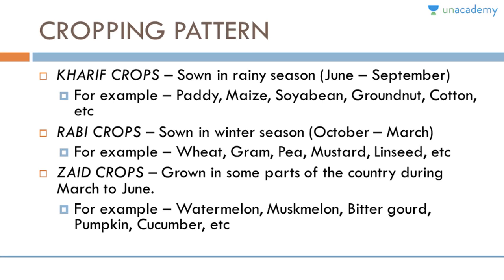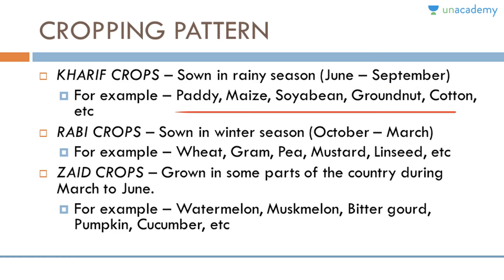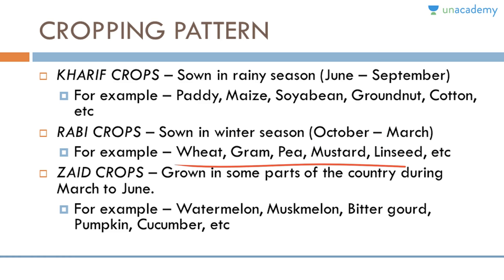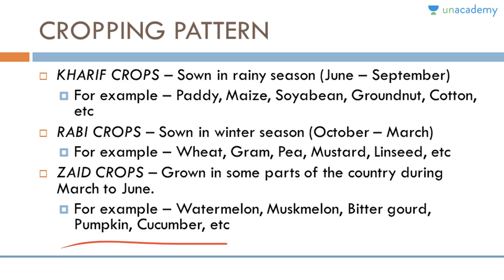In a country, different crops may be raised in a year, each in a different time period — known as cropping patterns. There are three main cropping patterns in India: Kharif crops, sown in the rainy season from June to September, including paddy, maize, soya bean, groundnut, and cotton; Rabi crops, sown in winter from October to March, including wheat, gram, pea, mustard, and linseed; and Zayed crops, grown in some parts from March to June, including watermelon, muskmelon, bitter gourd, pumpkin, and cucumber.